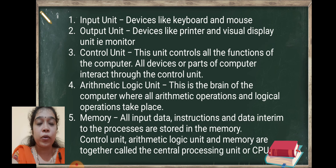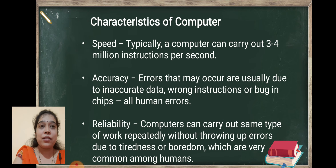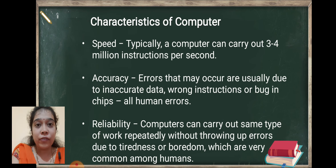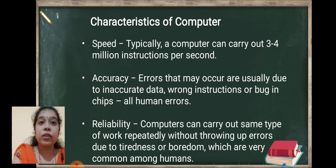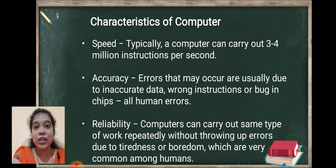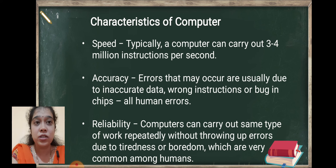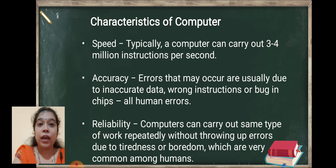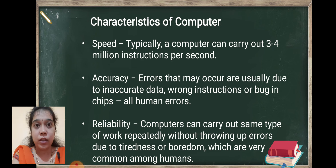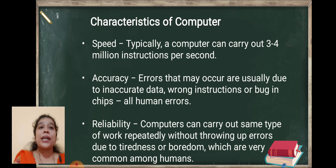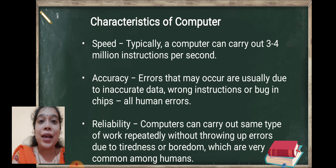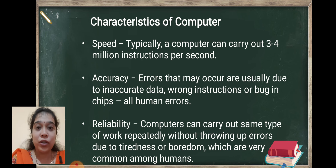Next point is characteristics of the computer. There are five different characteristics of computer. Let's start with first: speed. As we know, computer works very fast — typically a computer can carry out three to four million instructions per second. This computer speed is very fast.